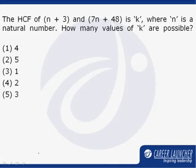The HCF of n plus 3 and 7n plus 48 is k, where n is a natural number. How many values of k are possible?